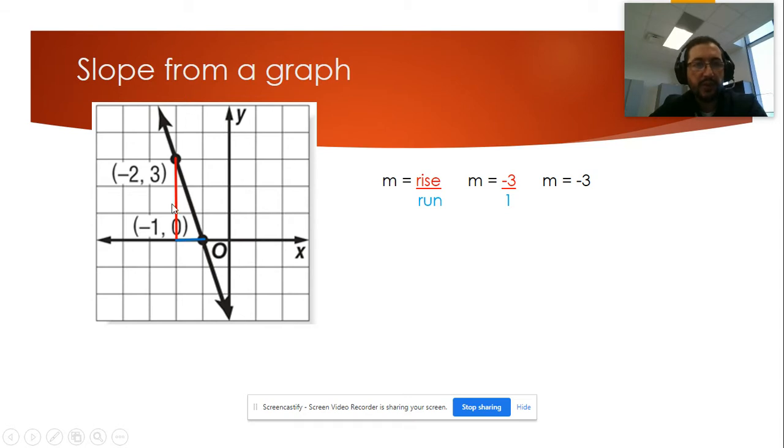Another way to find the slope when we have a graph is to use the two points and label the points: X of the first point, Y of the first point, X of the second point, Y of the second point, and use the two-point formula. The two-point formula, as I said before, will work in any scenario—like two points given, table, or graph.